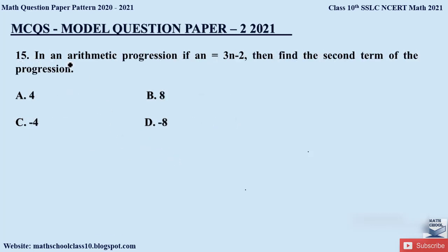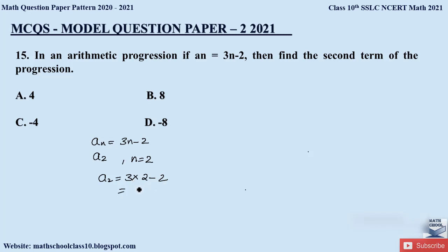Question 15: In an arithmetic progression, if aₙ = 3n − 2, find the second term. This question is repeatedly asked. To find the second term, substitute n = 2: a₂ = 3(2) − 2 = 6 − 2 = 4. The correct option is option A.